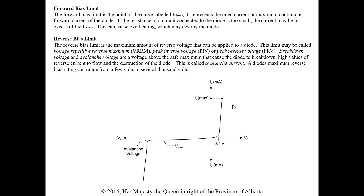The reverse bias limit is the maximum reverse voltage that can be applied to a diode. This limit may be called the VRM, peak inverse voltage (PIV), or peak reverse voltage (PRV). VRM is the one we use most. Breakdown voltage and avalanche voltage are voltages above the safe maximum that cause the diode to break down, causing high reverse current and destruction of the diode — this is called avalanche current. A diode's maximum reverse bias rating can range from a few volts to several thousand.